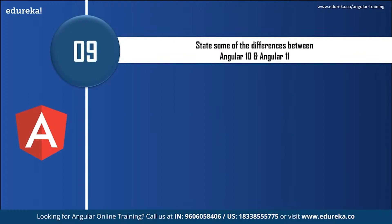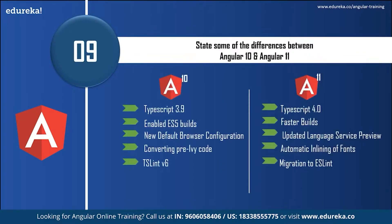Next: state some of the differences between Angular 10 and Angular 11. Angular 10 uses TypeScript 3.9 while Angular 11 upgraded to TypeScript 4. Angular 10 uses enabled ES5 builds but Angular 11 uses faster builds. Angular 10 has a default browser configuration while Angular 11 upgraded to language service preview. Angular 10 converted pre-Ivy code and Angular 11 uses automatic inlining of fonts. TypeScript Lint version 6 is used by Angular 10 but there is a migration to ESLint in Angular 11.